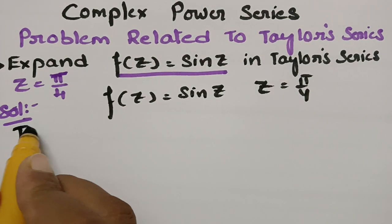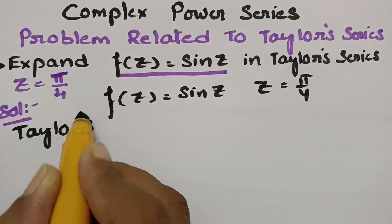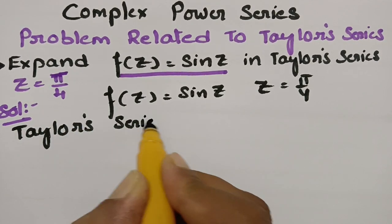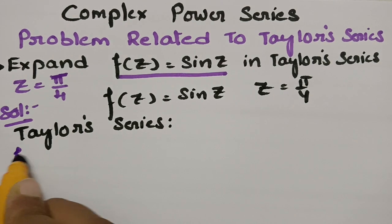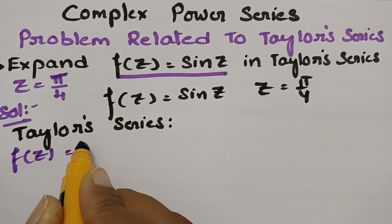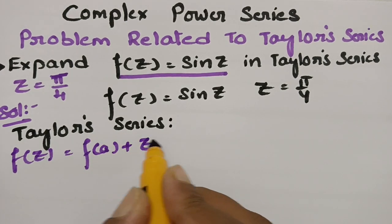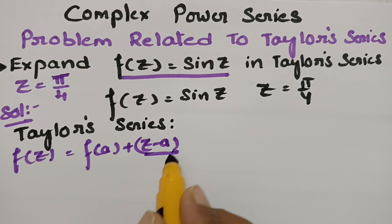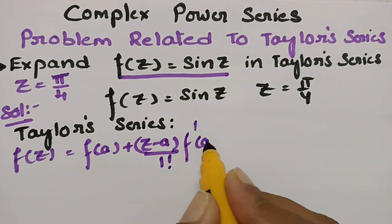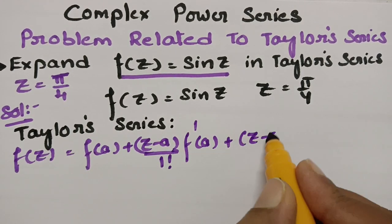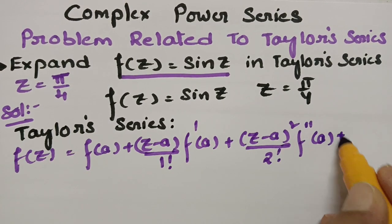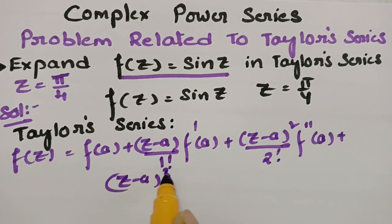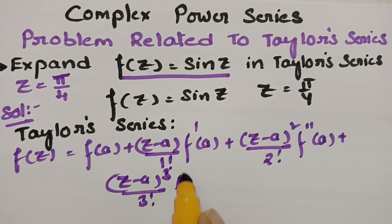According to the Taylor series expansion, we have f(z) equal to f(a) plus (z − a)/1! · f'(a) plus (z − a)²/2! · f''(a) plus (z − a)³/3! · f'''(a) plus and so on.